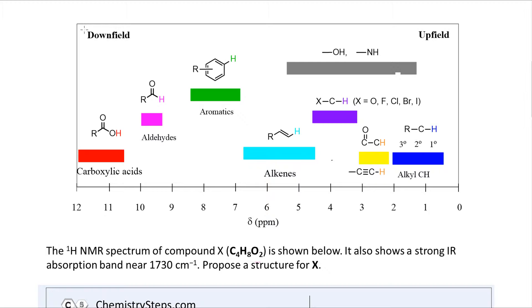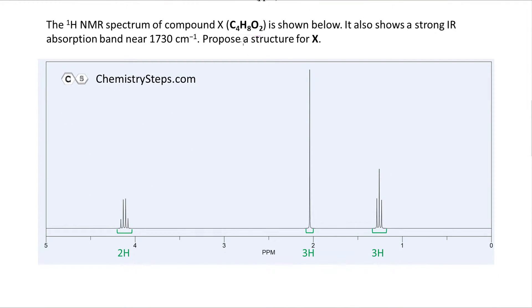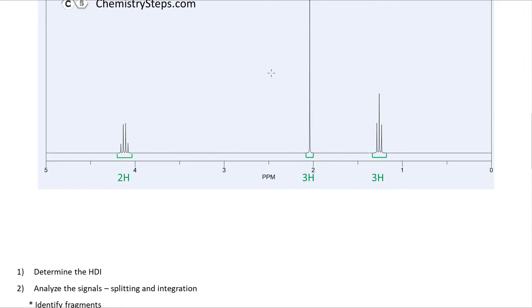This chart is part of the NMR summary sheets that you can download as a Chemistry Steps member — it's part of the entire organic chemistry summary sheets covering most topics in Organic 1 and Organic 2. So let's start working on this problem. First, let's identify the hydrogen deficiency index. We have C4H8O2.